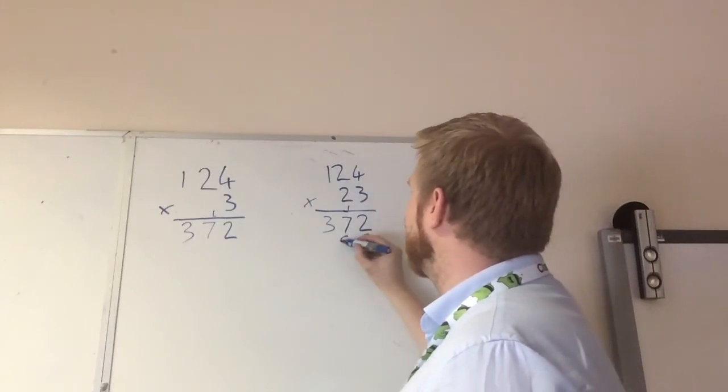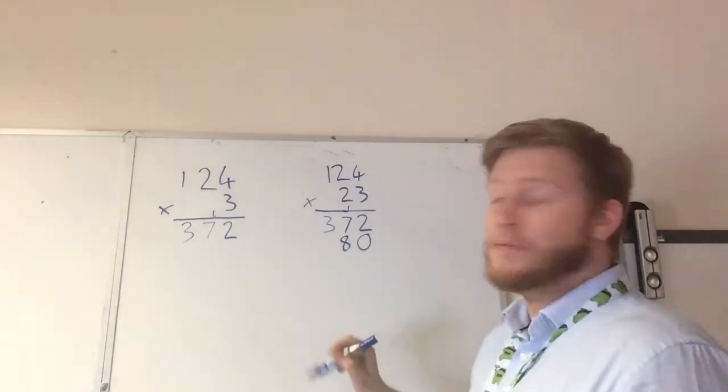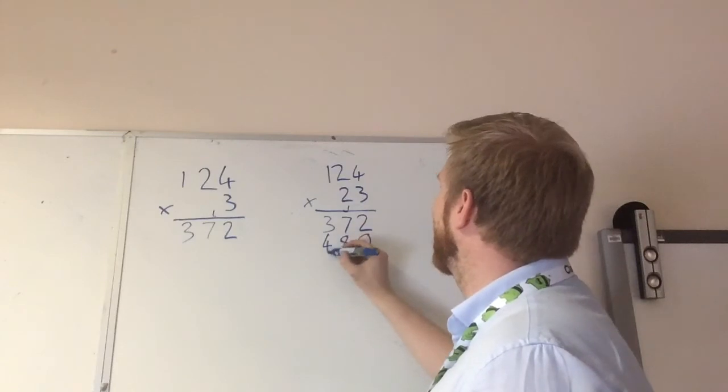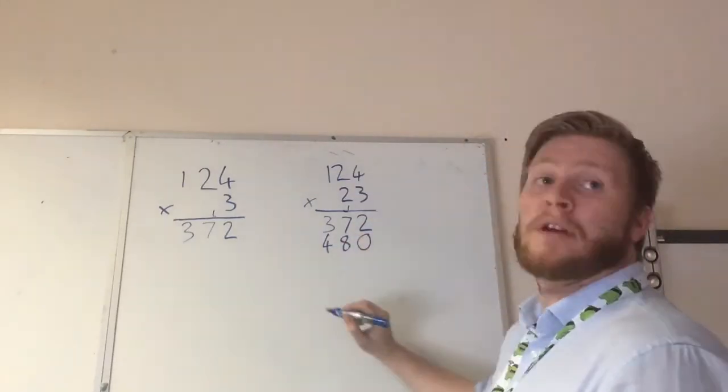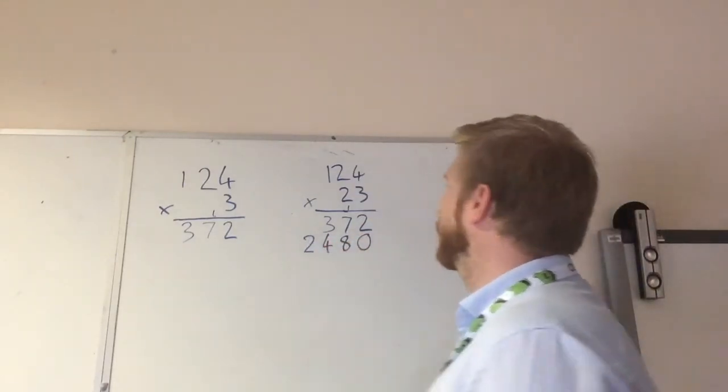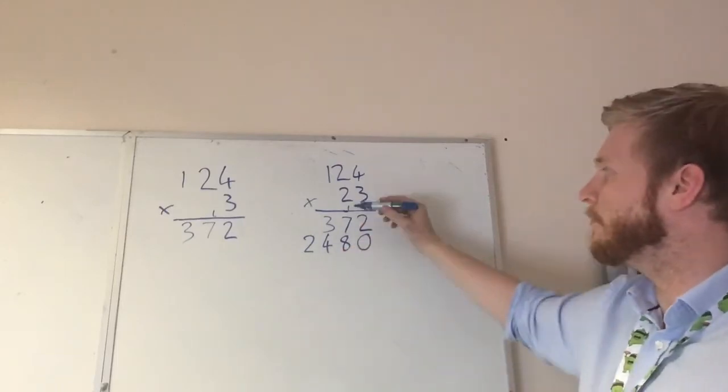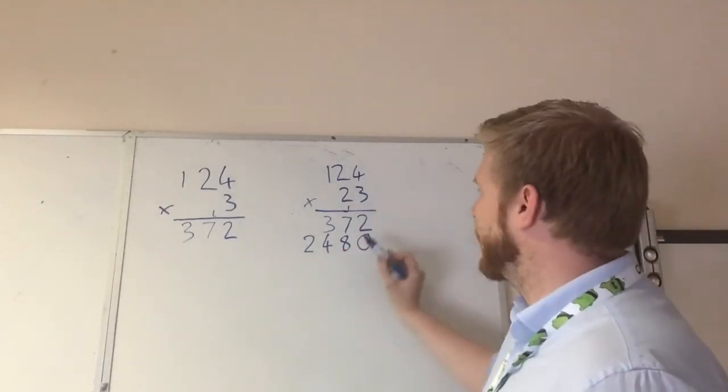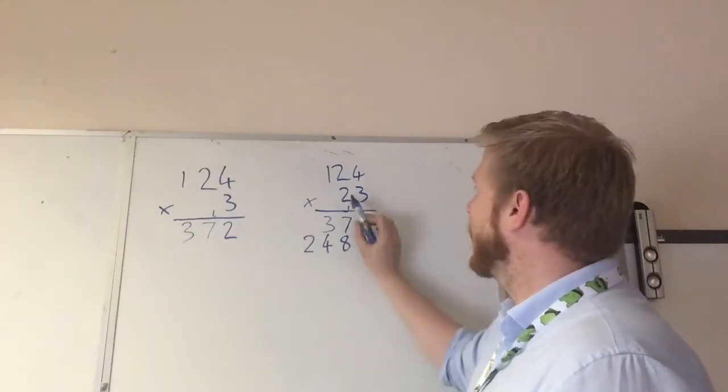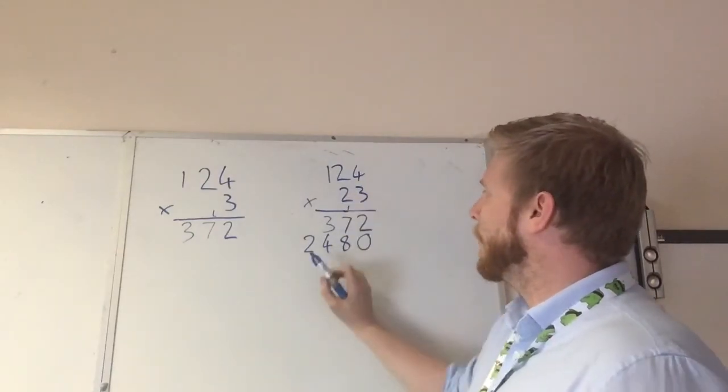So 2 times 4 is 8. 2 times 2 is 4. And 2 times 1 is 2. Make sure you get your numbers in the right columns. So that's the first one you do, 2 times 4. So that one goes right next to the 0. And 2 times 2 there, and 2 times 1 there.